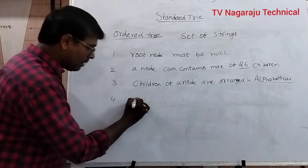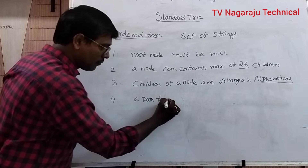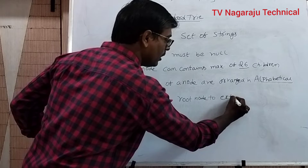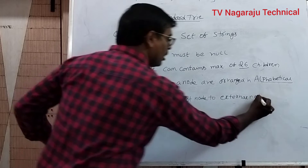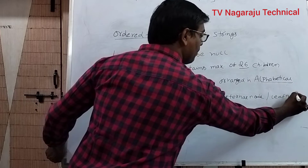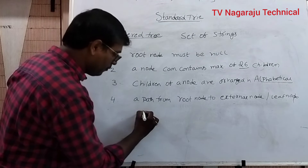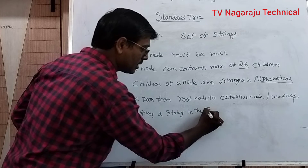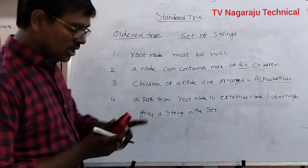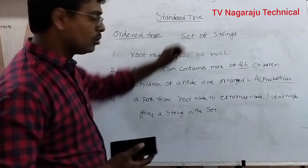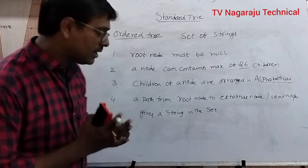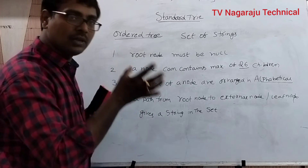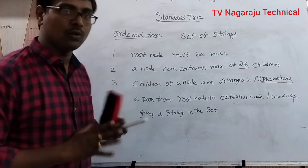In a path from the root node to an external node or leaf node, that path compulsory gives a string in the given set. So if you consider a path from the root node to the leaf node, it has to generate a string that is available in the set. These are some of the properties — the trie and the standard trie almost follow the same procedure.